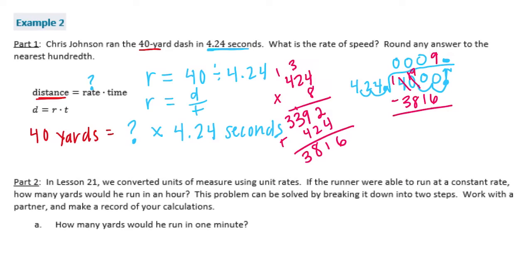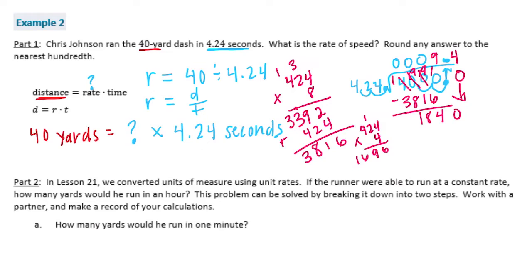We subtract 3816 from 4000, doing a lot of borrowing, and get 184. Adding a zero gives 1840. How many times can 424 go into 1840? About half of 3816, so we try 4. 424 times 4 is 1696, which fits. So far we have 9.4.